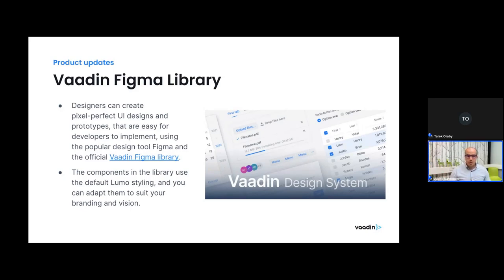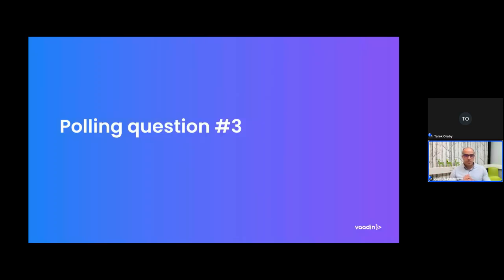Before giving the mic over, one final polling question: which of the following new Vaadin styling capabilities do you plan to use in the next few months? Theme editor, component locator, part selector, new documentation, or none of the above? The results show that detailed styling documentation, followed by component locator and the theme editor, seem to be quite popular.